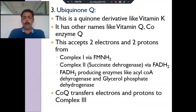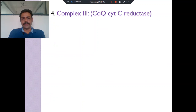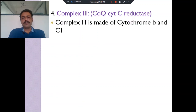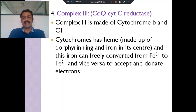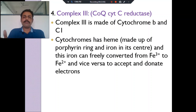What does Complex III do? It is also called CoQ-cytochrome c reductase. It receives from coenzyme Q and has cytochrome b and cytochrome c₁. All these cytochromes have iron at their center — iron changes from ferric form to ferrous form after accepting the electron.